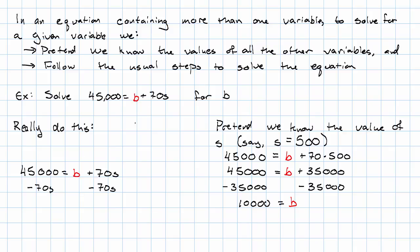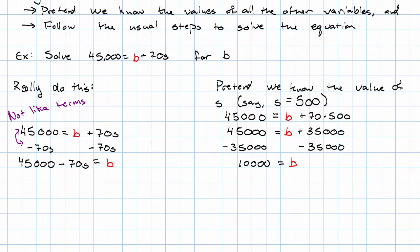These are not like terms, so we can't combine them. What do we do instead? We just write 45000 minus 70S. And that equals our B. That's it. That's all there is to it. What's our expression then? His base salary should be 45000 minus 70S. Not too bad.